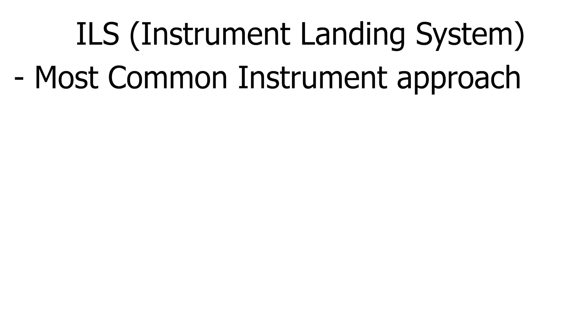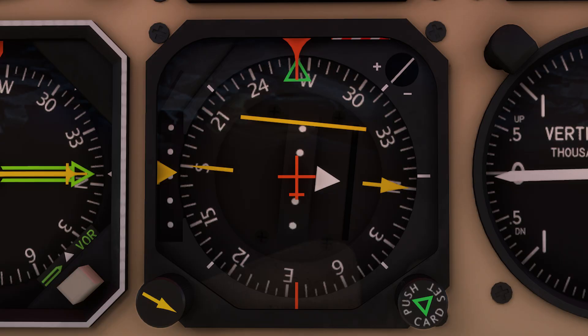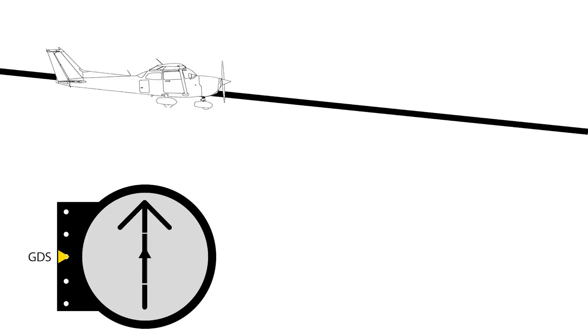ILS is the most common instrument approach in the world. ILS is made up of two systems: the localizer and the glide slope. The localizer gives lateral guidance to the aircraft - it works like a VOR but with more precision. The glide slope gives vertical guidance to the aircraft. The glide slope guidance is shown on the glide slope indicator, which shows the position of the aircraft on the glide path. If the aircraft is below the glide path, then the glide slope pointer will be above the center.